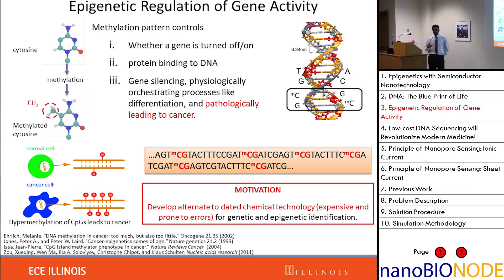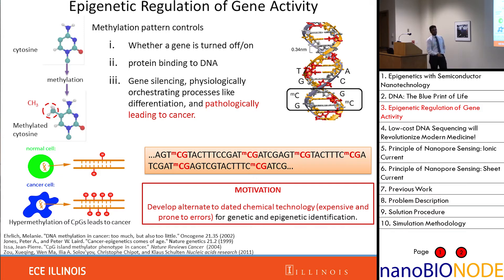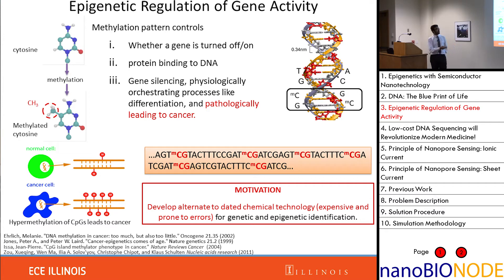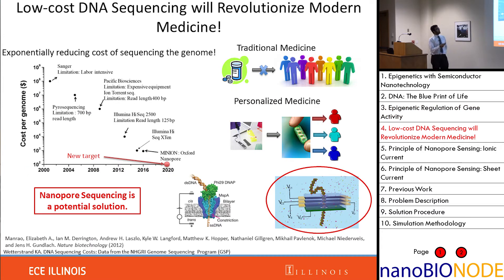The motivation of this problem is to find a very cheap and reliable technology to identify all these modifications. This is very important because there is a project known as the Human Epigenome Project, which tries to map all these epigenetic modifications across the human DNA — following up after the Human Genome Project. For all this, low-cost DNA sequencing is the answer.